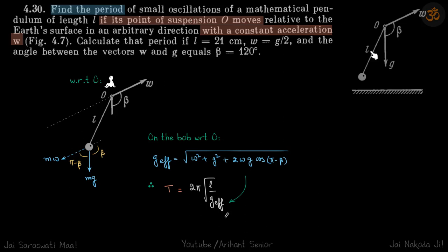We have a pendulum of length L where the point of suspension is moving with an acceleration W. The direction of acceleration makes an angle beta with gravity, and we need to find the period of small oscillations of the pendulum.